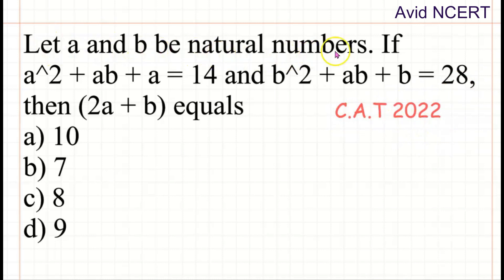Let A and B be natural numbers. If A² + AB + A equals 14 and B² + AB + B equals 28, then 2A + B equals question mark.